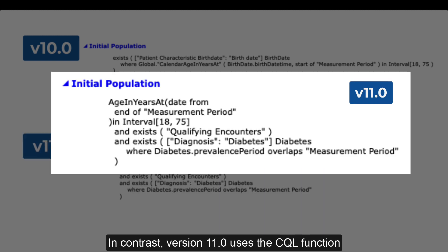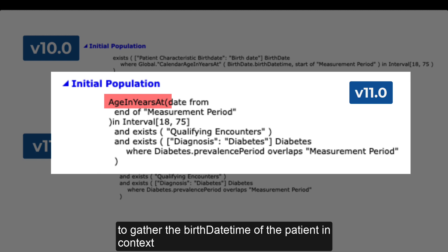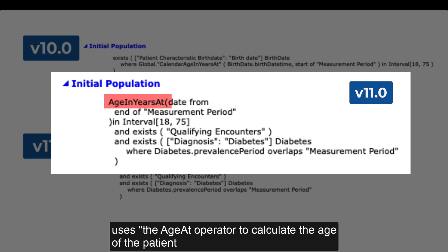In contrast, version 11 uses the CQL function age in years at to gather the birth date time of the patient in context during the specific query. We see the initial population statement here. The CQL function age in years at uses the age at operator to calculate the age of the patient as of the given date and in the precision named in the operator.